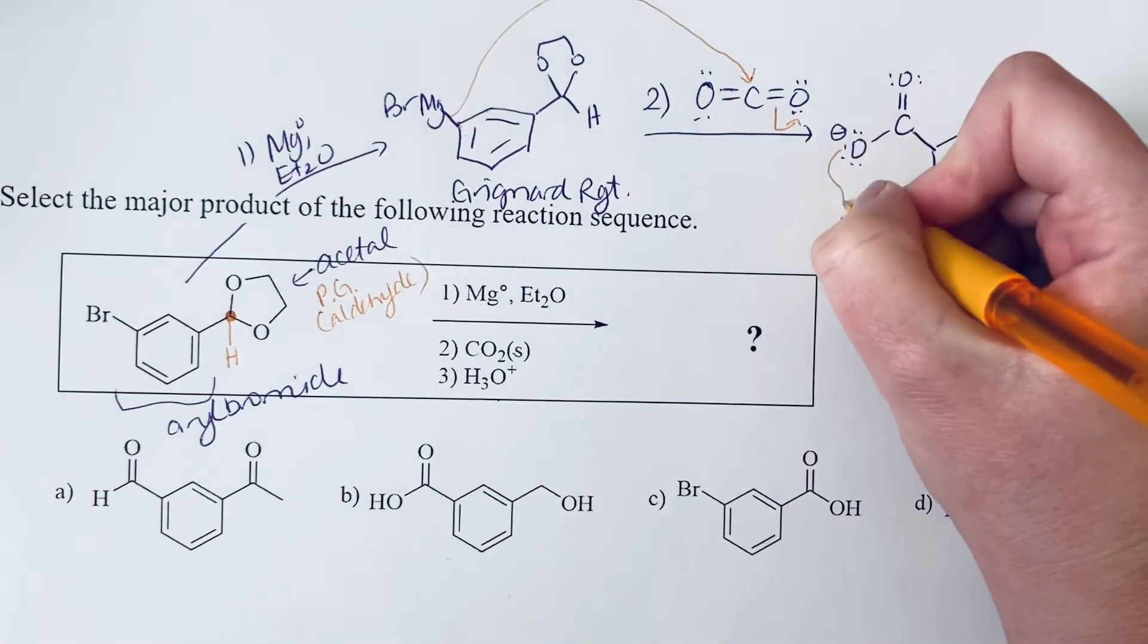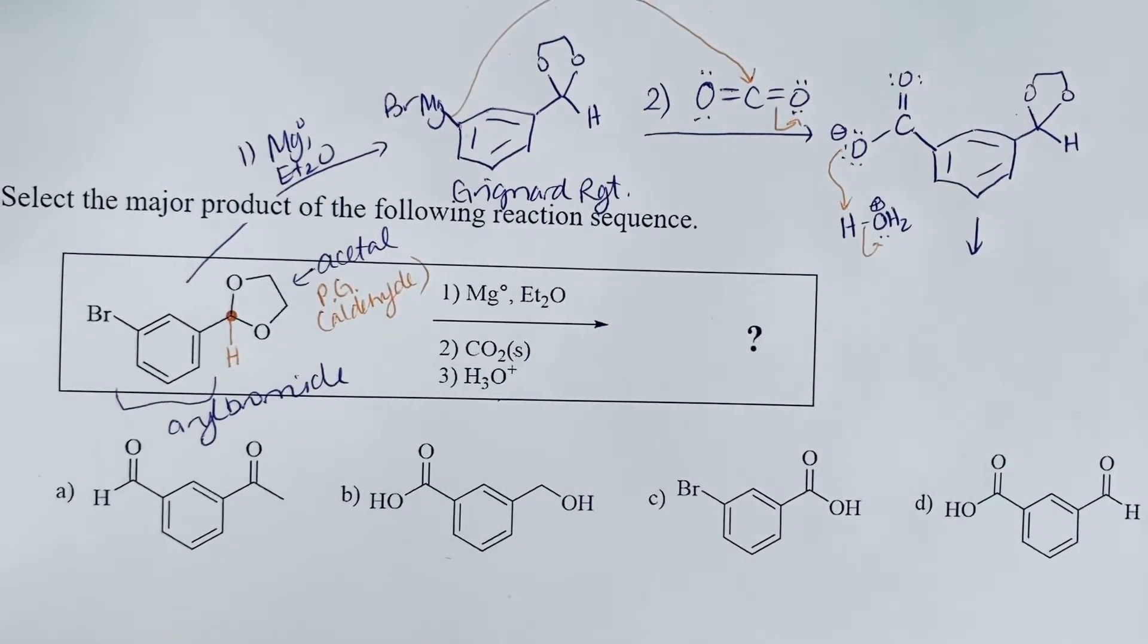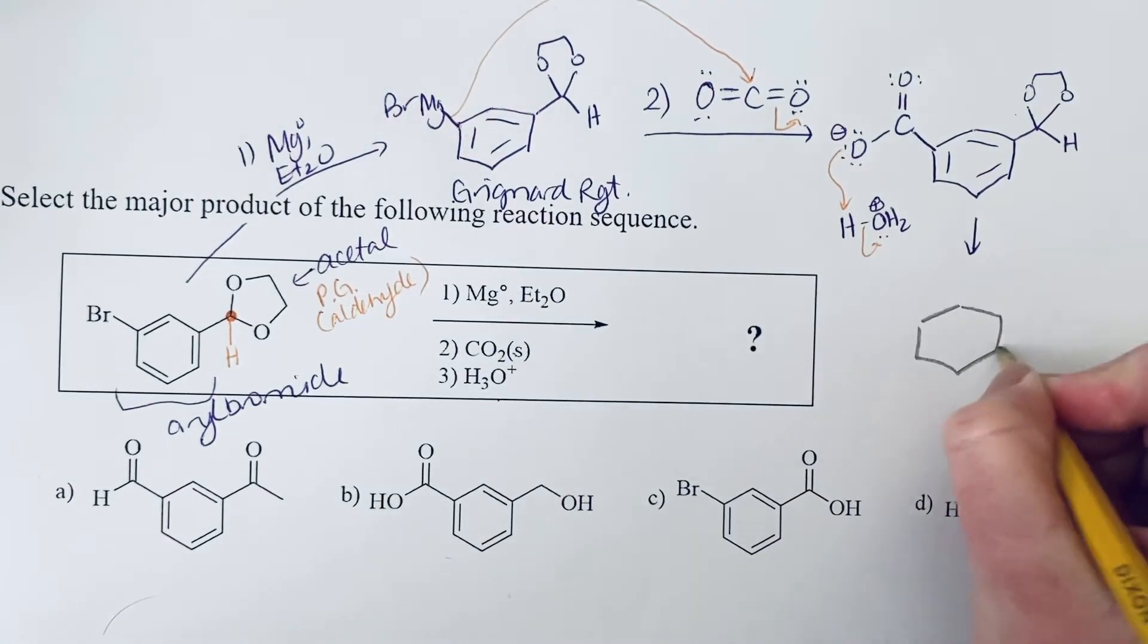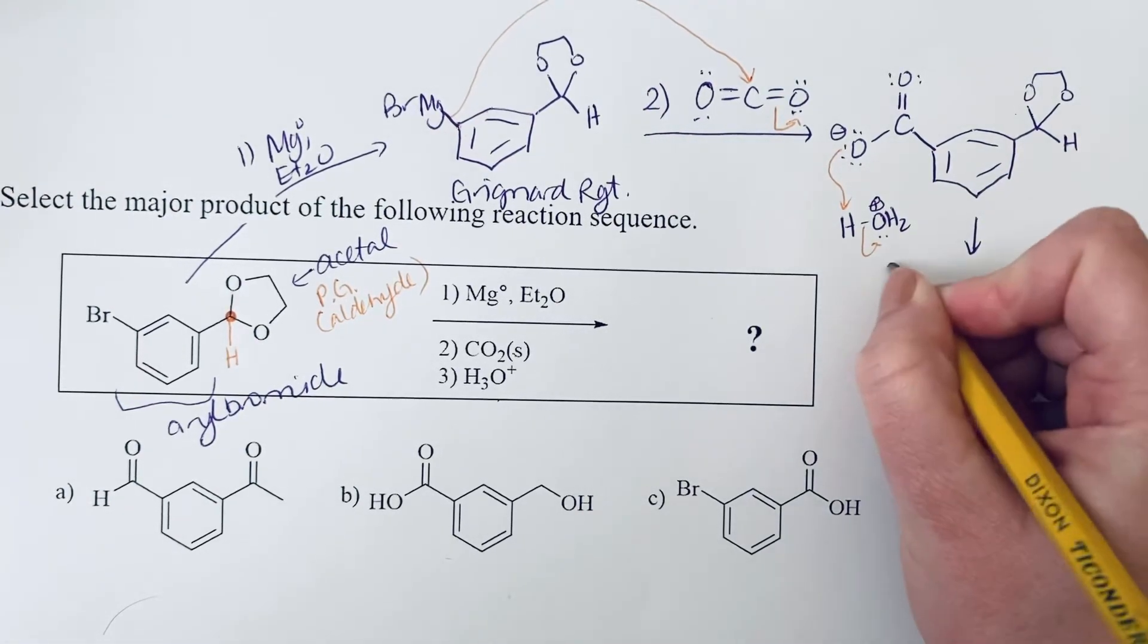So this step is probably pretty straightforward. We're just grabbing that proton. And I'm going to draw this product in pencil to help me out with that hydrolysis. So now we're going to have the carboxylic acid here.